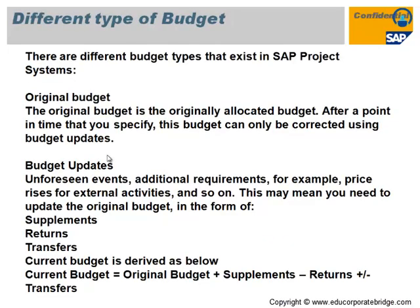The different budget types available in SAP Project System are: original budget — the initial upload of budget in the system; supplementary budget — added when funds are exhausted during project execution; return budget — when balance funds remain after project or WBS completion; and budget transfer — moving budget from one WBS to another. The current budget formula is: Current Budget = Original Budget + Supplementary − Return +/− Transfer.